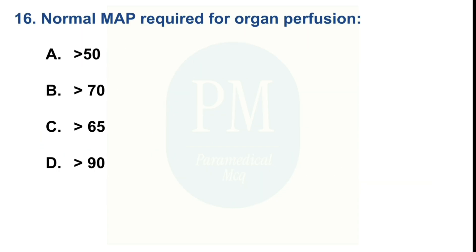Normal MAP (mean arterial pressure) required for organ perfusion — Option A: greater than 50. Option B: greater than 70. Option C: greater than 65. Option D: greater than 90. The correct option is Option C — greater than 65.